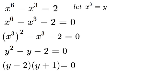So now we just need to set both sides equal to 0 and we will get our answer. So we have y minus 2 equal to 0 and y plus 1 equal to 0.